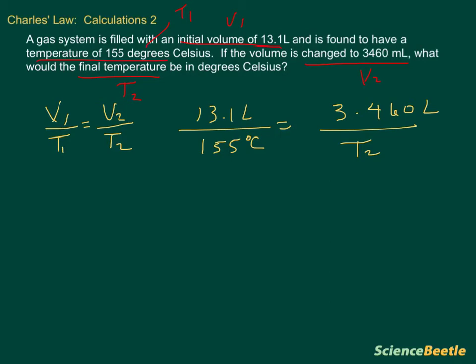What we're going to do is take T2 and multiply that by 13.1 liters. This is going to be equal to the cross multiplication of these two numbers here. That's going to be 3.46 liters multiplied by 155 degrees Celsius.